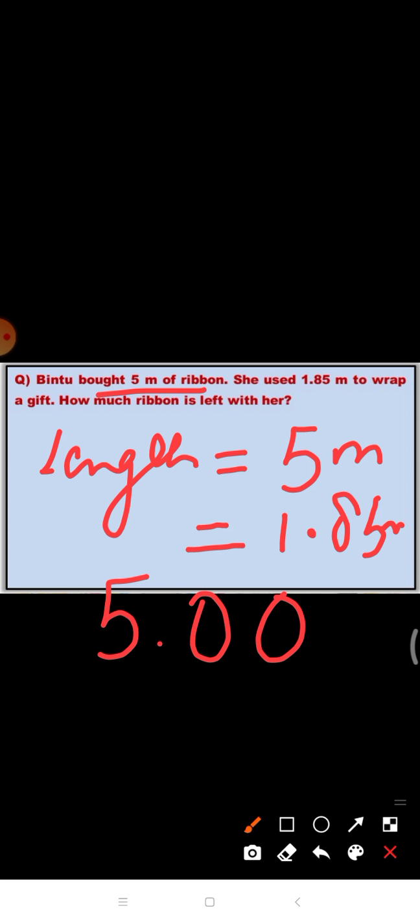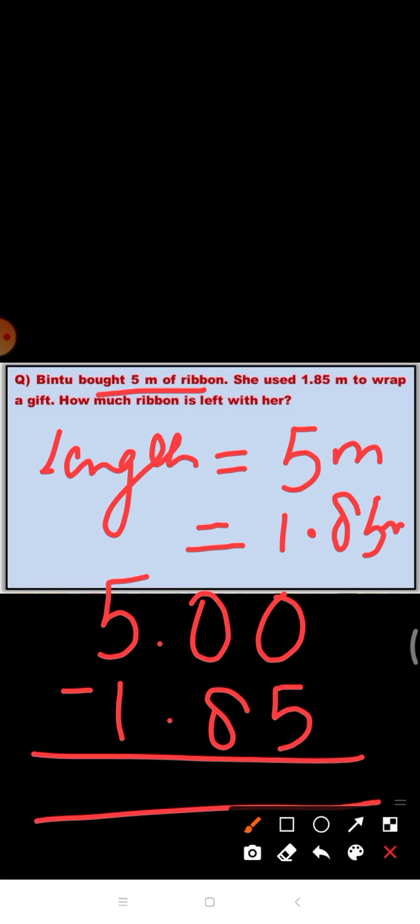So, we will subtract 1.85 from 5 meters. So here, we do not have enough hundreds and tens. So we will regroup. So it will become 4. This will become 9. And this will become 10. So 10 minus 5 is 5. 9 minus 8 is 1. And 4 minus 1 is 3. And we will put here the point.